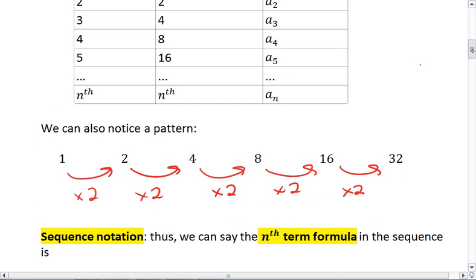This brings us to what we call the nth term formula. Basically, we can write a formula that will tell us what any given term is. So if we plug 1 into this formula, it will give us 1. If we plug 2 into this formula, it gives us 2. If we plug 3 into this formula, it will give us 4. If we plug in 4, it will give us 8. If we plug in 5, it gives us 16.